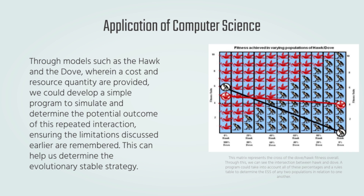So how is this applied to computer science? When we create a model such as the Hawk and Dove model, where a cost and a resource quantity is provided, we can actually develop a simple program to simulate and determine the potential outcome of repeated interaction — while remembering the limitations discussed earlier — to help determine an evolutionarily stable strategy. In this matrix, we can see the cross of the Dove and Hawk fitness overall and how they intersect, allowing us to determine the evolutionarily stable strategy applicable in the real world.